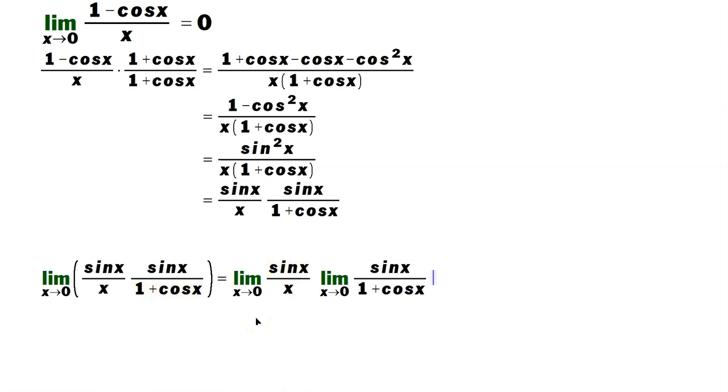Now the limit as x approaches 0 of sine x over x is known to be 1, and the other one you can do through direct substitution. So it becomes sine of 0 over 1 plus cosine of 0.